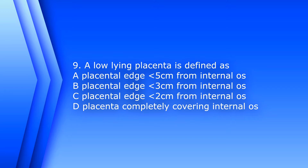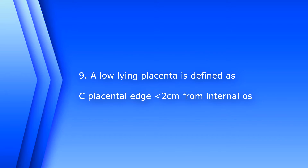Number 9. A low lying placenta is defined as: A. The placental edge less than 5 cm from the internal os. B. Placental edge less than 3 cm from the internal os. C. Placental edge less than 2 cm from the internal os. Or D. Placenta completely covering the internal os. The answer is C. Placental edge less than 2 cm from the internal os.